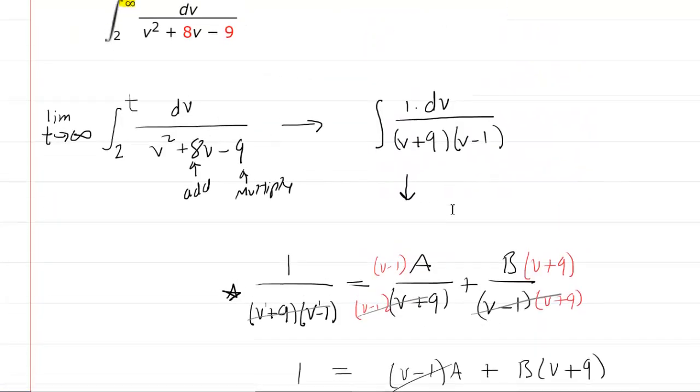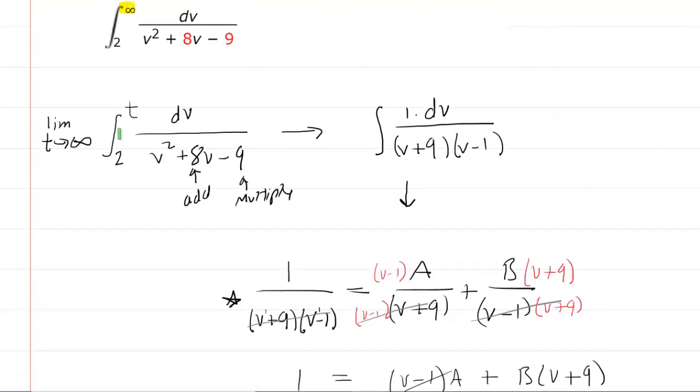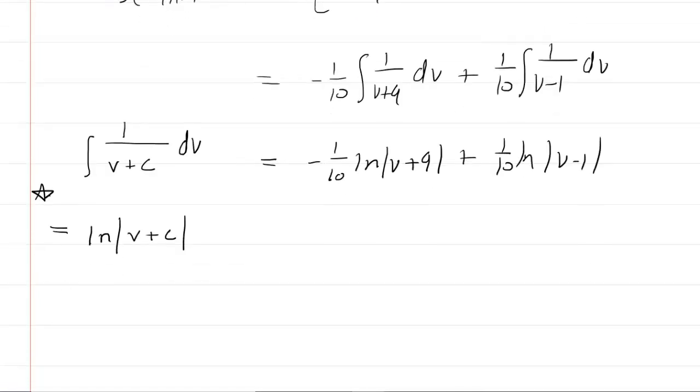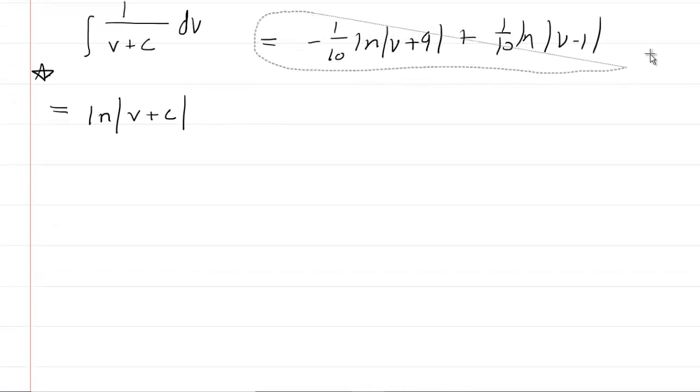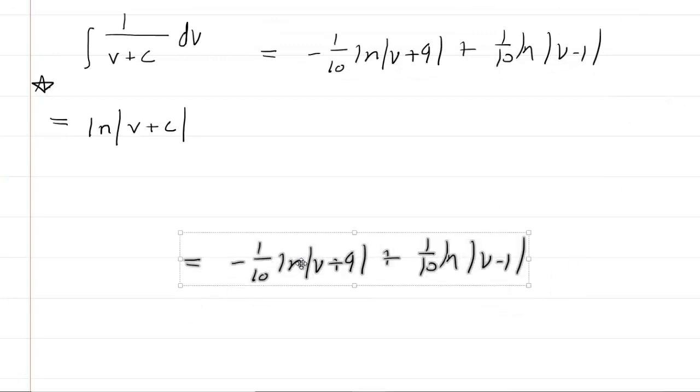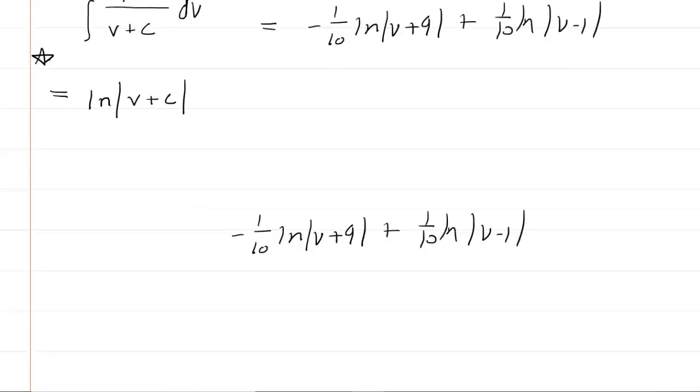We have to go back. And remember that we had bounds. We had a lower bound of 2 and an upper bound of t. So you have to go back now and put the bounds on. So we'll copy our expression here. And then we'll put the bounds on. 2 to t. So we're going to evaluate this from 2 to t. Don't forget that the limit as t approaches infinity was part of this problem.